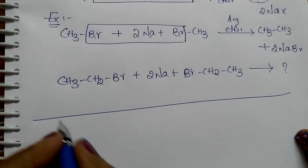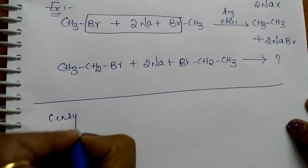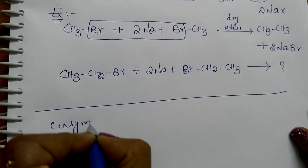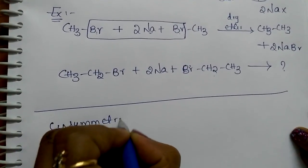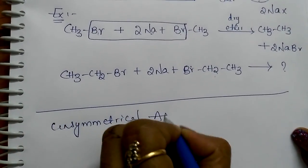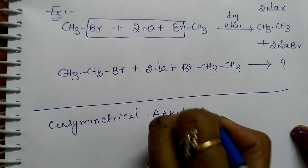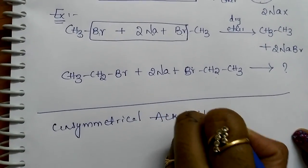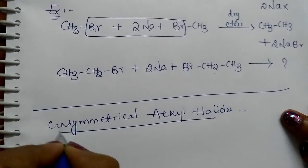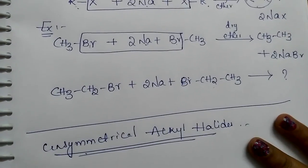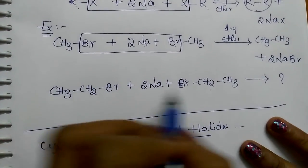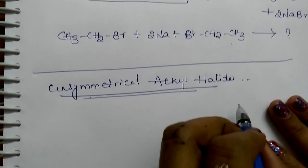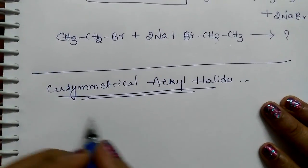Let us see for unsymmetrical alkyl halides. Here both the alkyl halides are same. Suppose if both the alkyl halides are different, what will be the products?